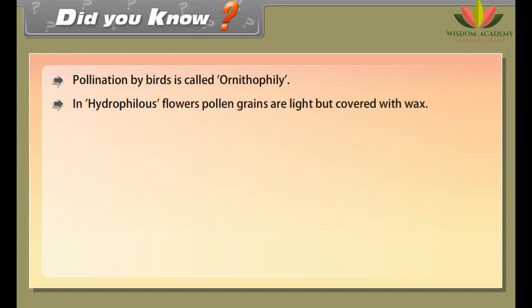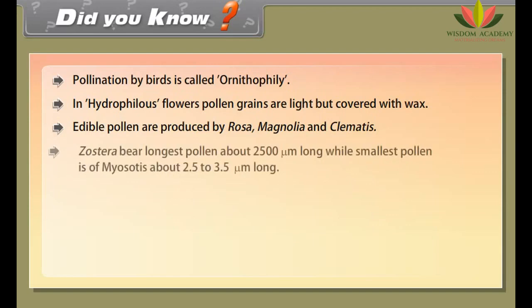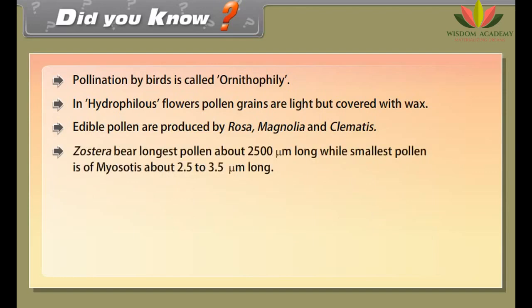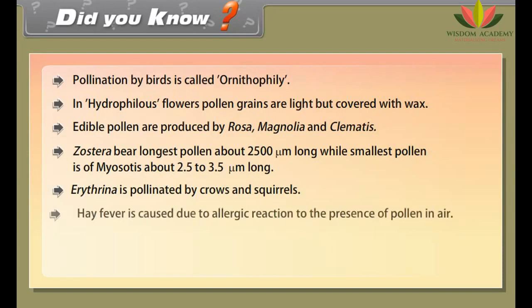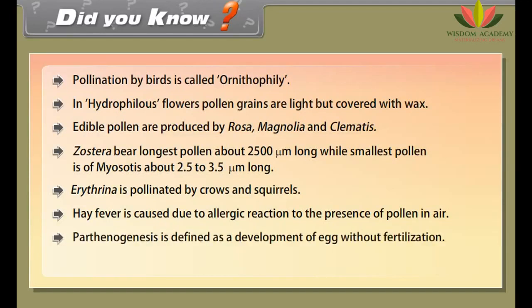The ovule is a minute structure in seed plants containing the embryo sac and surrounded by the nucellus, which develops into a seed after fertilization. It consists of three parts: the integuments forming its outer layers, the nucellus or megasporangium, and the megaspore-derived female gametophyte or mega-gametophyte at its center. The mega-gametophyte, also called the embryo sac in flowering plants, produces an egg cell for fertilization.